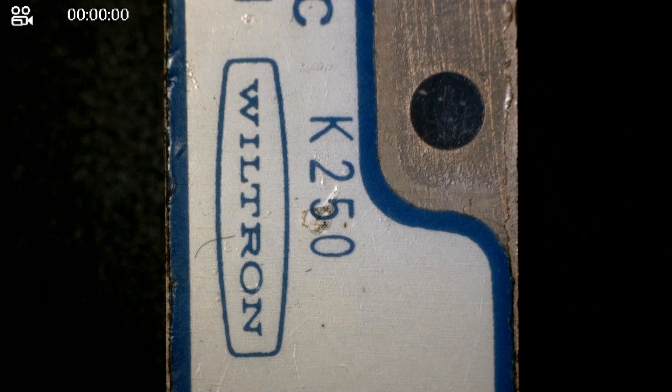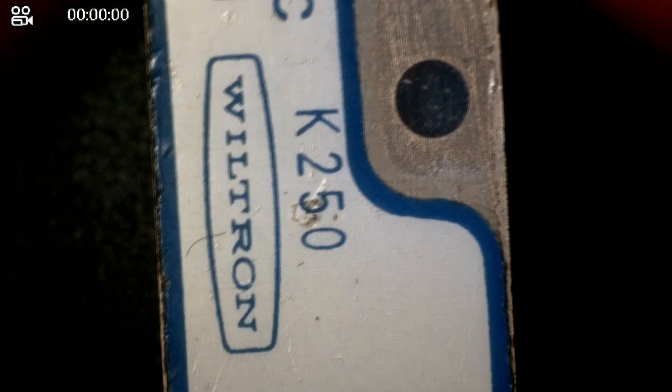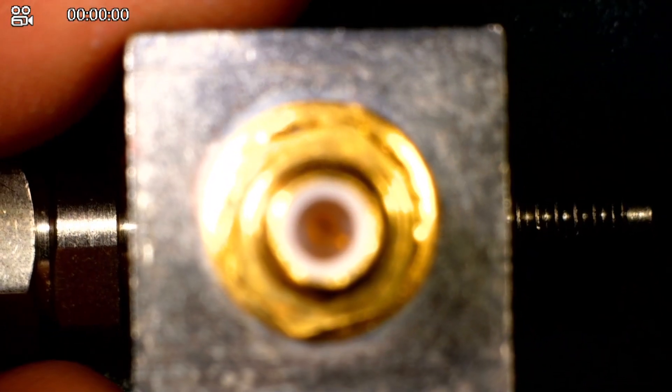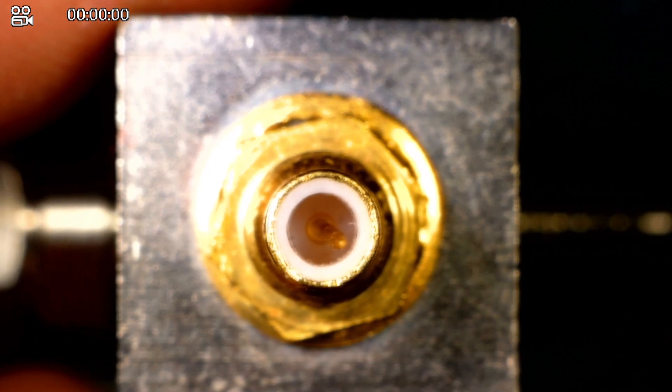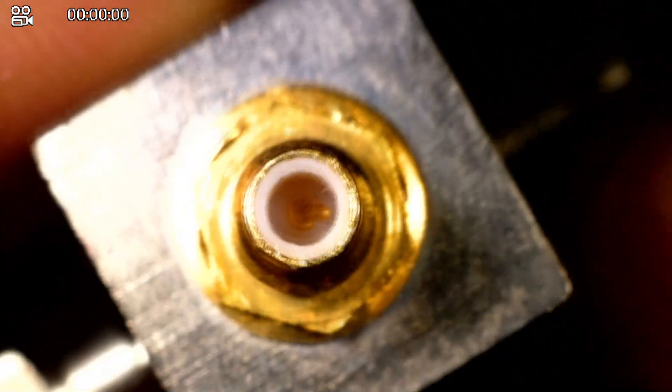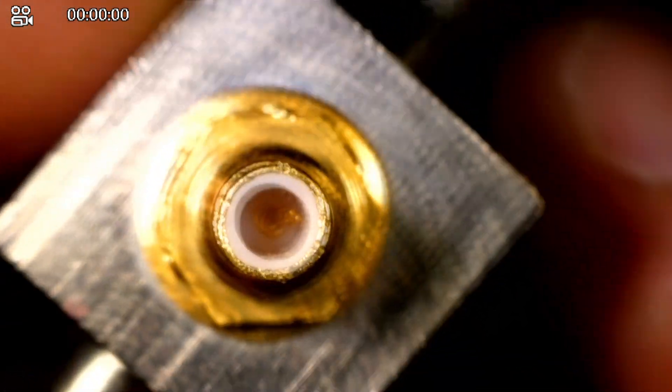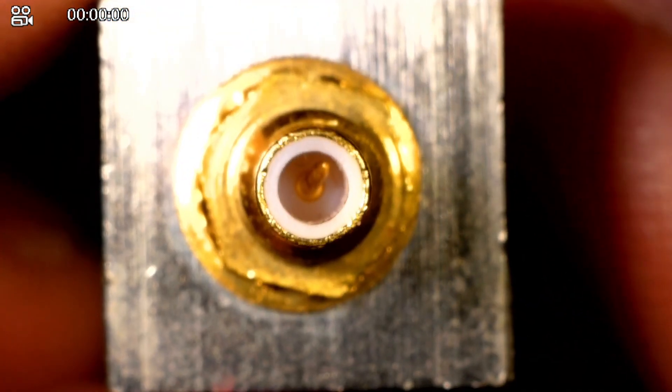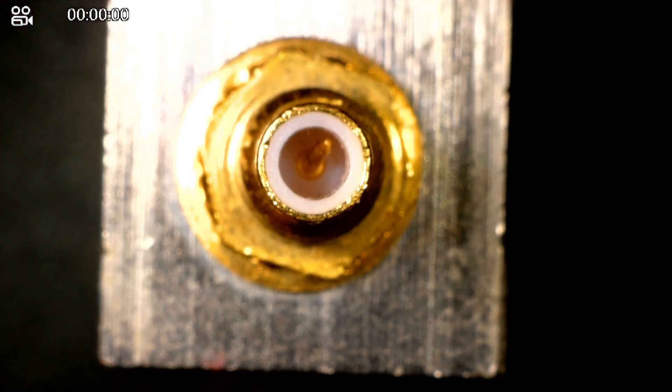So I was looking at some of the other bias tees and this one is actually labeled Wiltron. Wiltron was purchased by Anritsu quite a while ago. And then I looked at one of them and check this out. Now this one has a bent pin. So I wonder if this was considered also damaged in the same way, but it's actually just a bent pin problem. Well, there's only one way to find out. We're going to straighten this pin out and try to measure it.